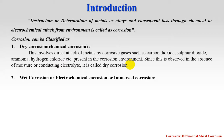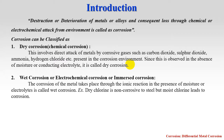The second type is wet corrosion, also called electrochemical corrosion or immersed corrosion. Here, the corrosion of metals takes place through ionic reactions in the presence of moisture or electrolytes. The rusting of iron is the best example of wet corrosion.